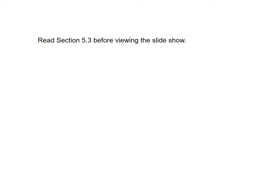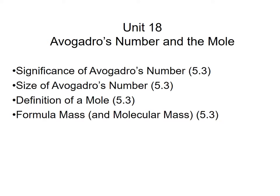Welcome to unit 18. In unit 18 we're going to take a look at something called Avogadro's number — how we count and work with atoms, masses, and molecules. It's sort of a background on that, so you ought to take a look at section 5.3 before you view this slideshow. A couple things we're going to look at: how important Avogadro's number is, how big it is, and we're going to define something called a mole.